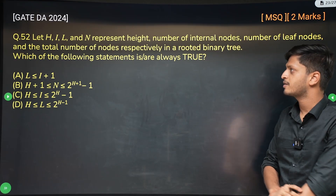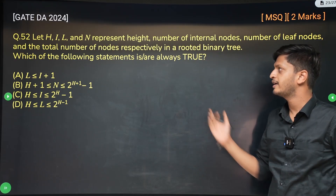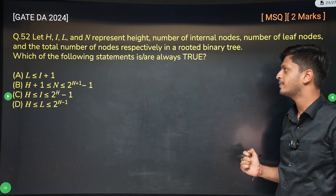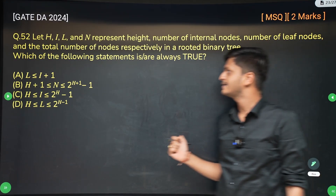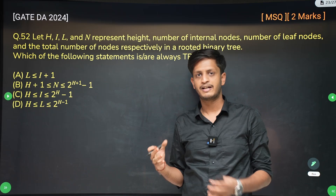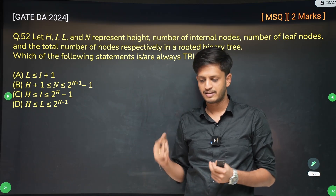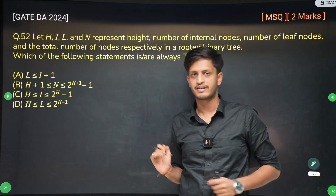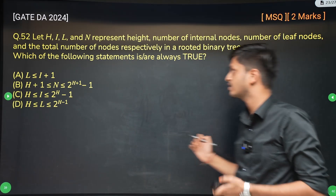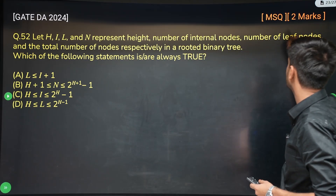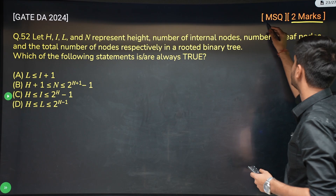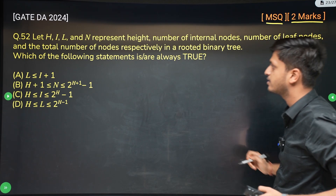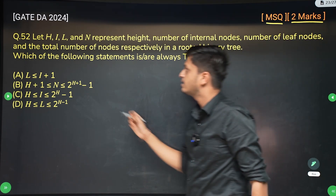Hi everyone. This is question number 52 from GateD8194 paper, and this question is from data structures — specifically full binary trees. This is a two mark question and a multiple select question.